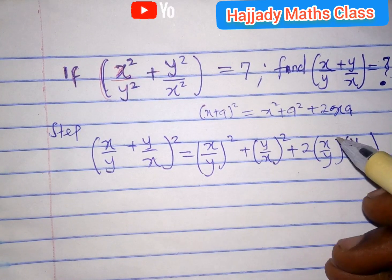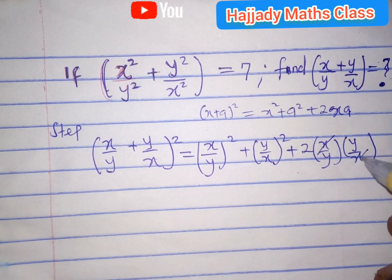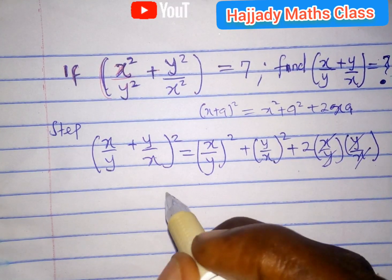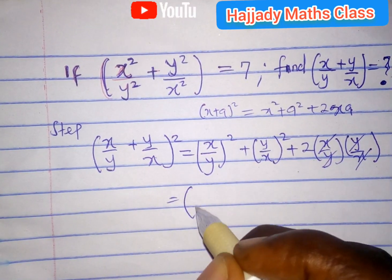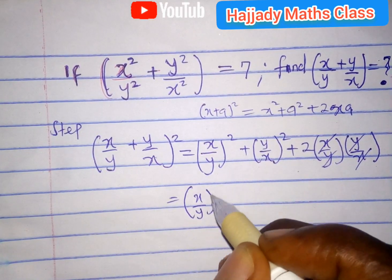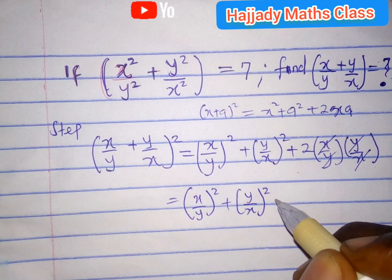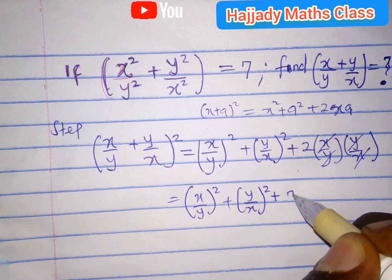So solving this further now, we should know that x can cancel out x, while y cancels out y. So this is going to give us x over y all squared plus y over x all squared plus 2.